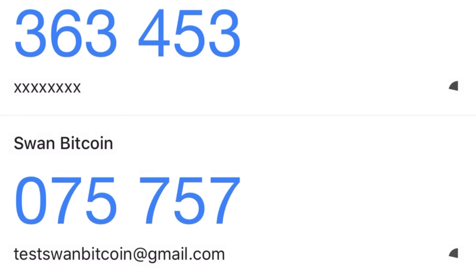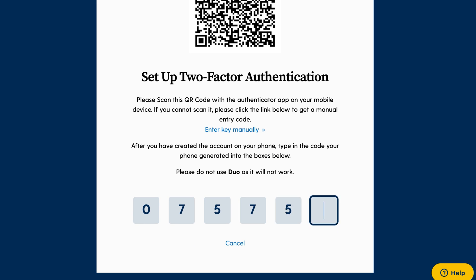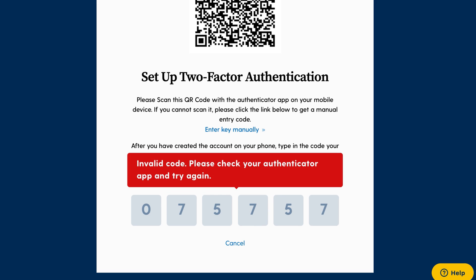This means that it will generate an endless series of 30-second codes. On your phone, you can see a timer countdown of how much time you have remaining before the code switches. If you put in an old code, it will not work.